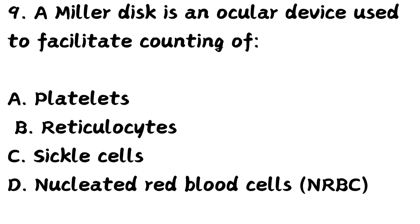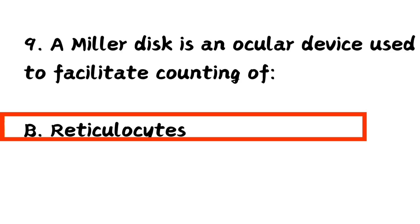Question number 9. A Miller disk is an ocular device used to facilitate counting of: Option A, platelets. Option B, reticulocytes. Option C, sickle cells. Option D, NRBC. The right answer is Option B, reticulocytes. For reticulocyte counting, the microscopic field has to be minimized with a Miller disk.